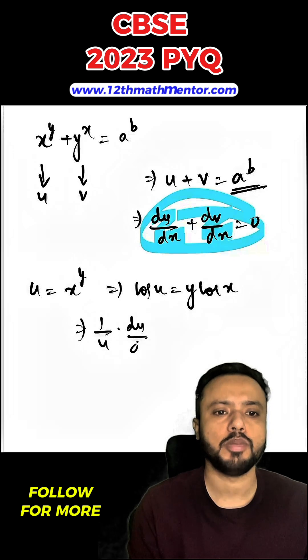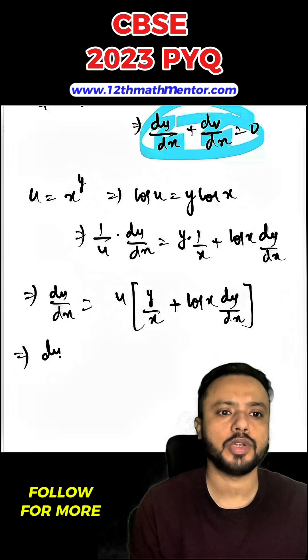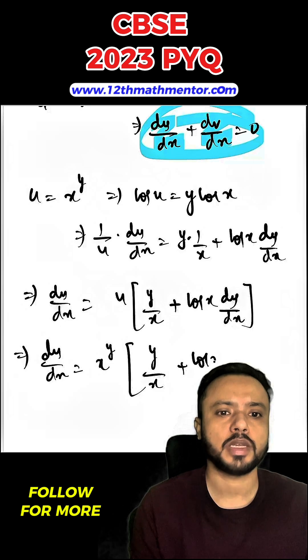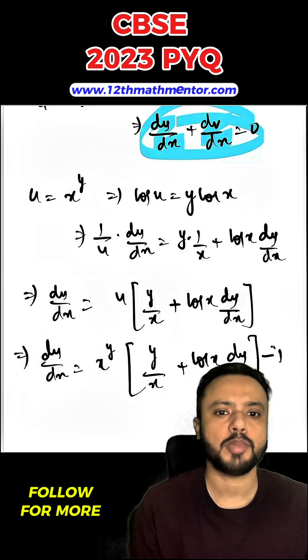You will get 1 upon u into du upon dx equals y into 1 upon x plus log x into dy upon dx. Now we will substitute the value of u. So du upon dx will be equal to x raised to the power y into y upon x plus log x into dy upon dx. This is the first equation.